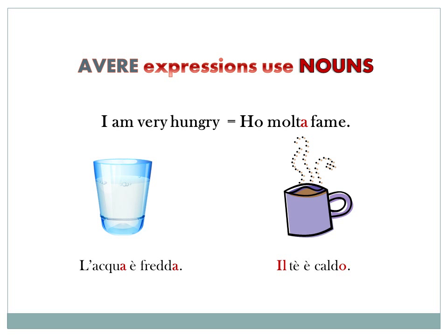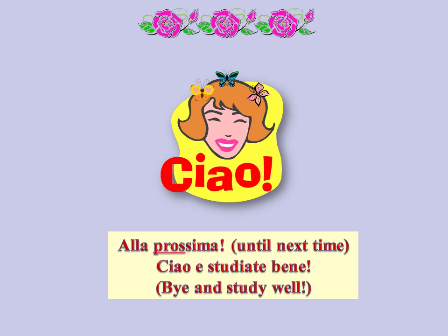When saying that something other than a person is cold or hot, such as water or tea, then the words freddo and caldo will be used as four-form adjectives with the verb essere. Some examples: L'acqua è fredda — the water is cold. Il tè è caldo — the tea is hot.